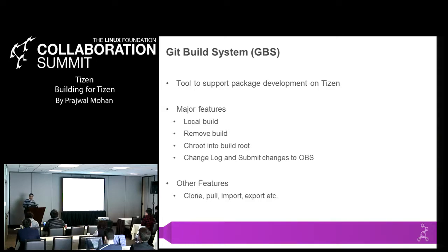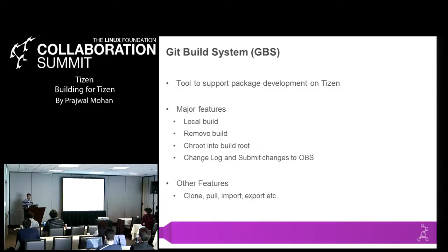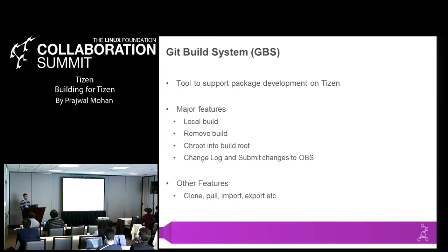When you are done with local building, you would want to submit your changes. One of the things we recommend developers to do is include a change log with your submission so it gives an idea as to what changes you are trying to submit. The submit itself will create an annotated tag with the format mentioned before and submits the changes to OBS for review by release engineers. So GBS provides a nice wrapper around already available tools and provides a local build feature so developers can do everything from cloning Git trees to local build, remote build, chroot into the build, or submit changes.